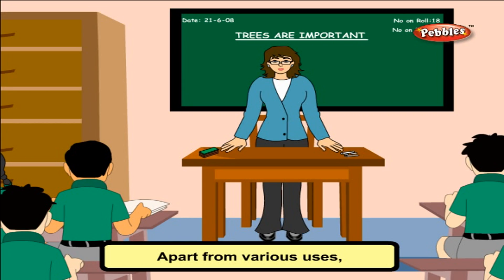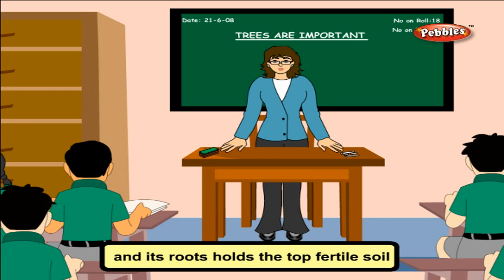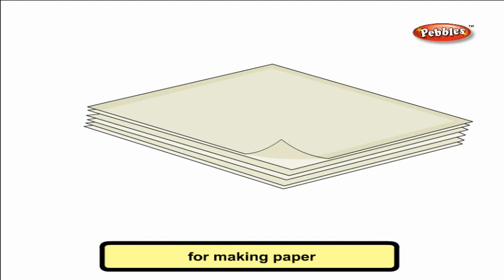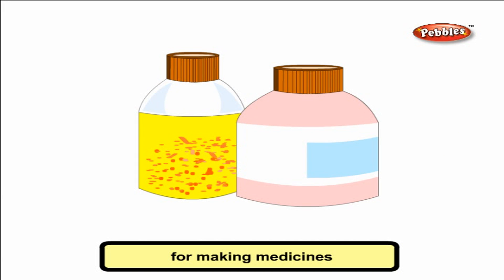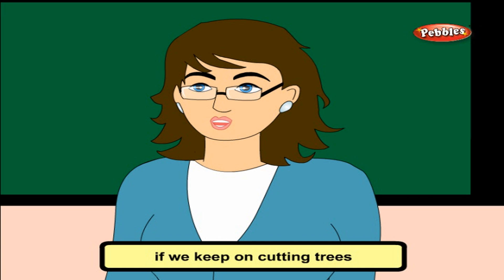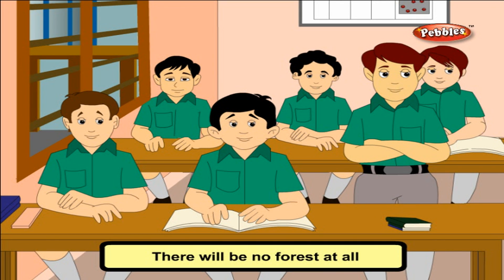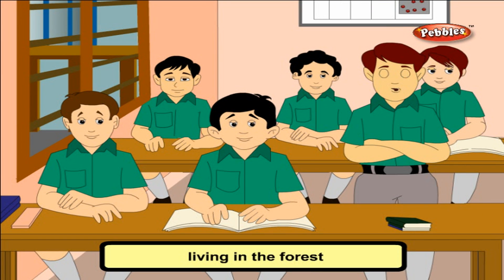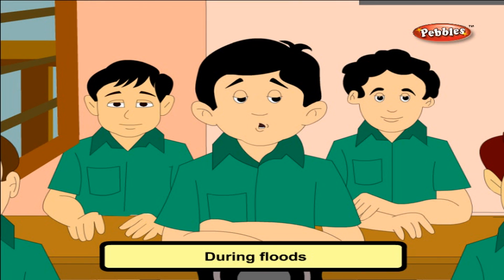Trees are important. Apart from various uses, trees give us oxygen to breathe and their roots hold the top fertile soil during rain and flood. Some uses of trees: for making furniture, for making paper, for making medicines. What will happen if we keep on cutting trees? There will be no forest at all. We will have no oxygen to breathe. Birds and animals living in the forest will suffer. During floods, the soil will be washed away and there will be no fertile land for agriculture.